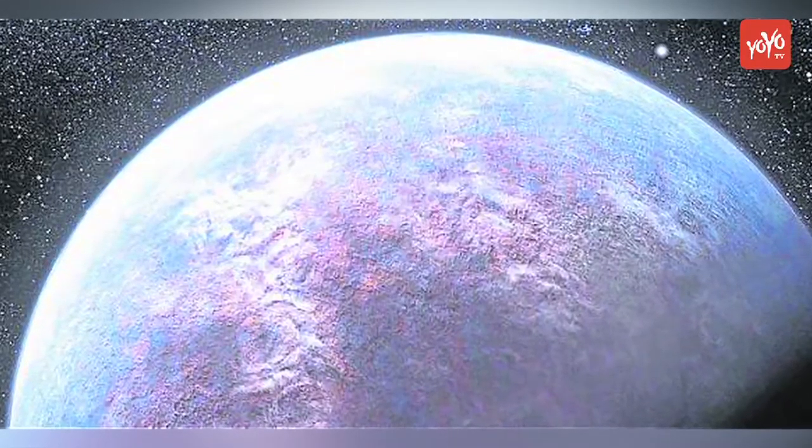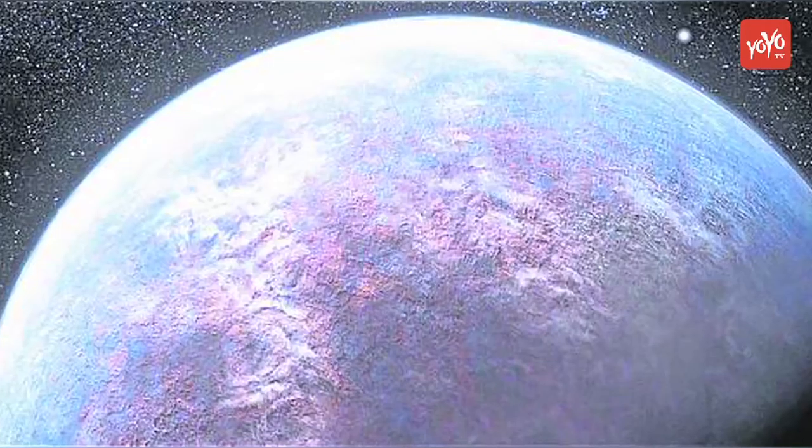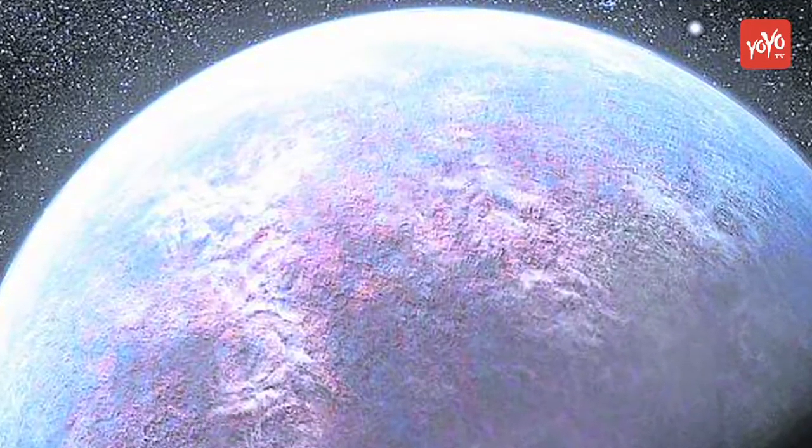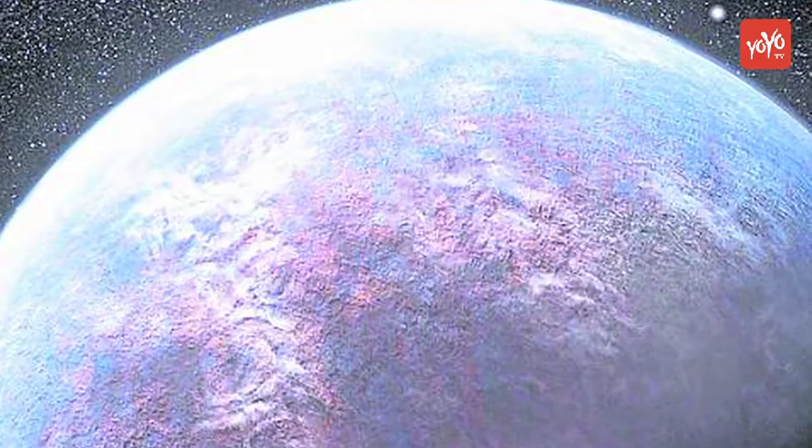Since Wolf 1061 c is close to the inner edge of the habitable zone, meaning closer to the star, it could be that the planet has an atmosphere that is more similar to Venus.